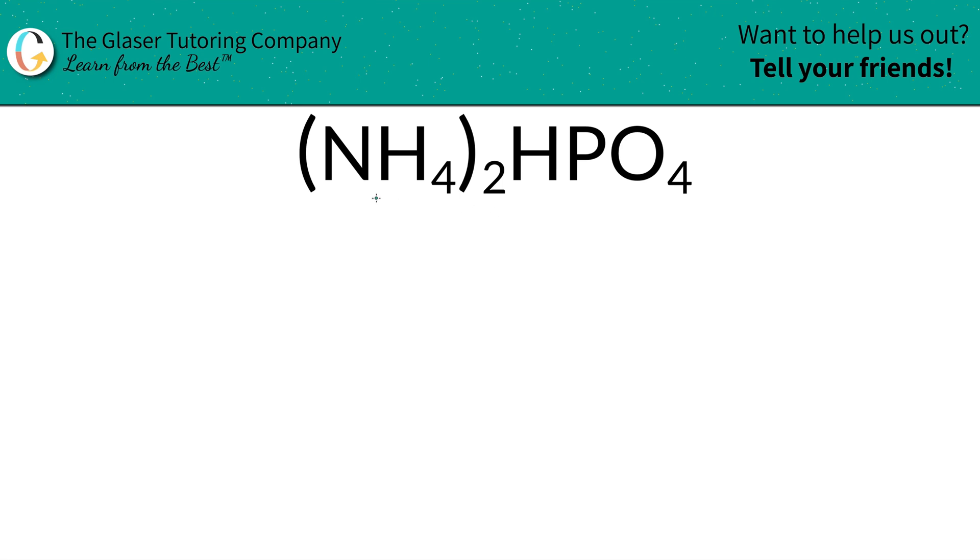So how do we find the mass percents of nitrogen, hydrogen, phosphorus, and oxygen in ammonium hydrogen phosphate? Well, it turns out, first thing is, we've got to find the total mass of the compound, and then finding those percentages are going to be easy as pie. Take a look.